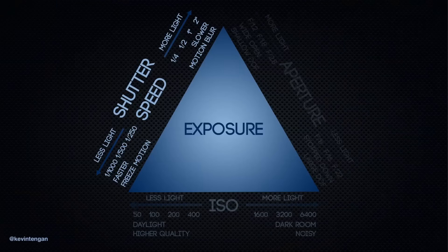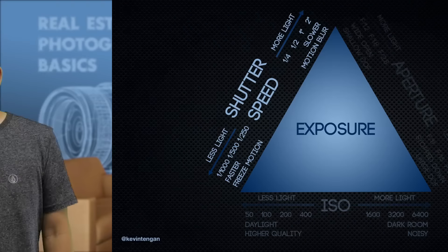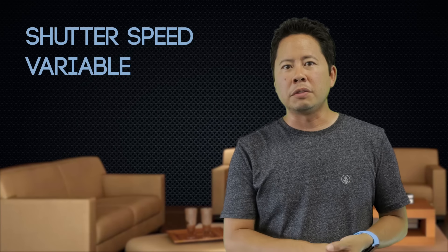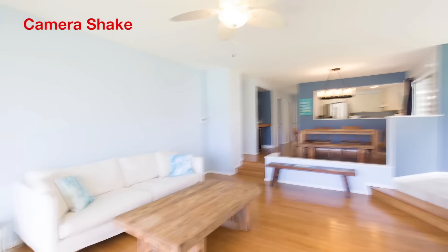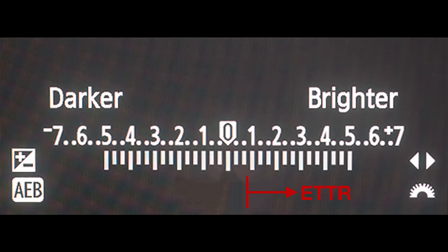Now that we've essentially locked down two of the three settings — ISO to around 100 to 400 and aperture to around 7.1 to 11 — that gives us one setting to play around with: the shutter speed. The shutter speed controls the amount of time the shutter is open in order to capture light. A faster shutter speed lets less light in but can freeze motion, while a longer shutter speed allows more light in but can also cause blur. Since nothing we're photographing inside a room is typically moving, that allows us to set a very long shutter speed — shutter speeds of one second or more won't be uncommon in poorly lit rooms. Hence the tripod. Trying to hand-hold your camera with a slow shutter speed can introduce camera shake, causing blur. When setting my shutter speed, I tend to allow a slight amount of overexposure, also known as exposing to the right, or ETTR.